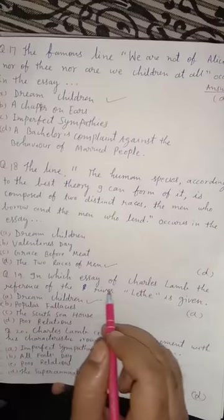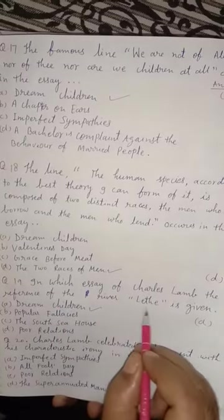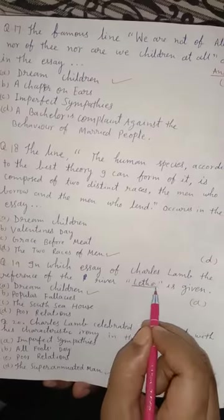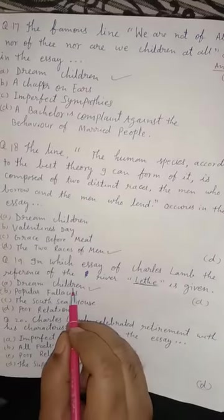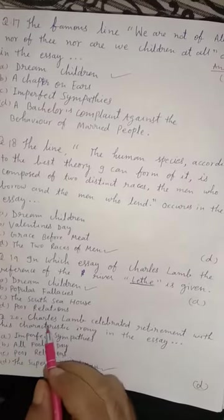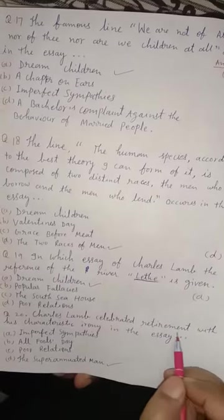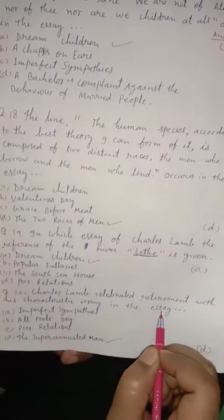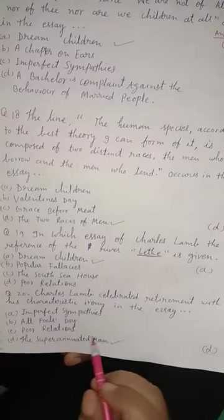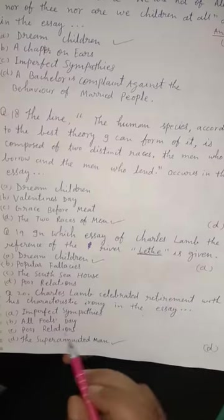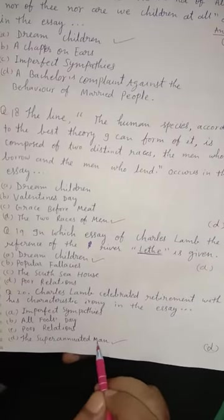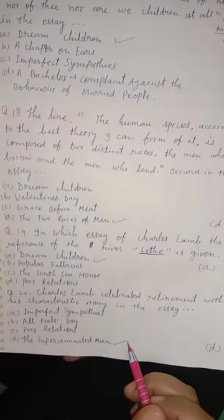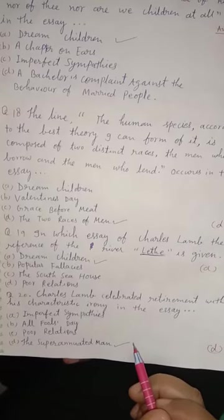Question 19. In which essay of Charles Lamb is the reference to the river of oblivion given? This river is mentioned in one of his very famous essays — 'Dream Children.' Option A is correct. Question 20. Charles Lamb celebrated his retirement with characteristic humor in the essay 'The Superannuated Man' — he was a clerk in his life. Option D is correct. Friends, please subscribe to the channel for the next videos, which would be very beneficial for all of you. Thank you.